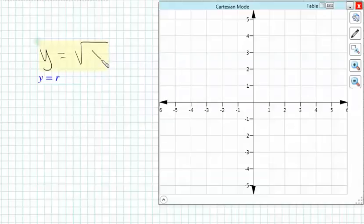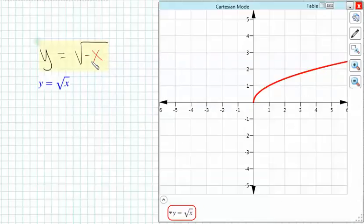like y equals the square root of x. Let's graph that, and if we negate the x, it causes a reflection over the y-axis,